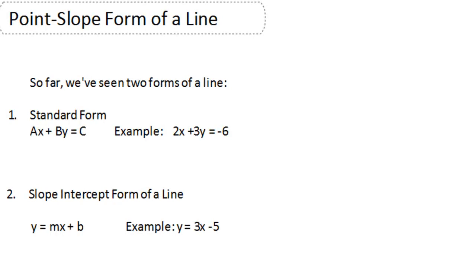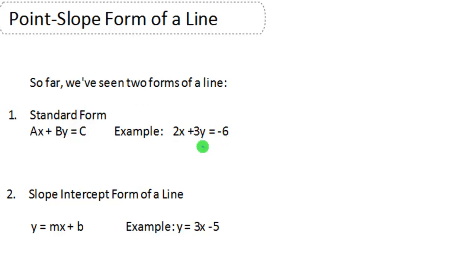In this video we are going to talk about the point slope form of a line, but first let's review that we have seen two forms of a line so far. The standard form looks like ax plus by equals c. You notice that the x and y are on the same side of the equal sign and usually the coefficients are integers for the standard form.